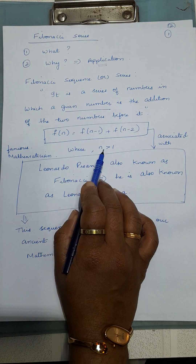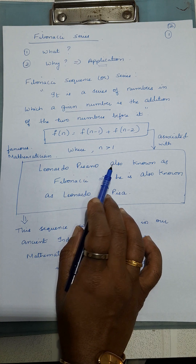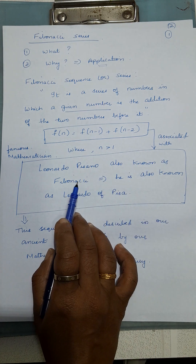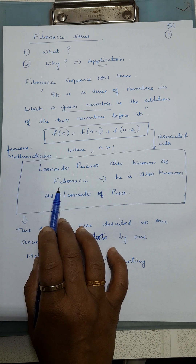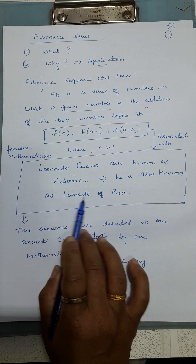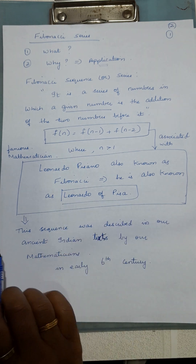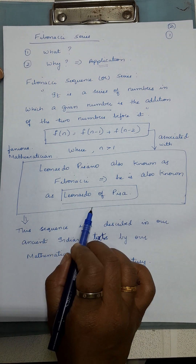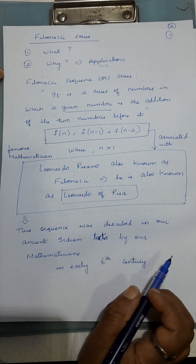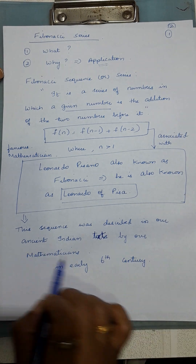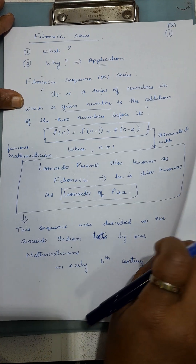This applies where n is greater than 1. This particular mathematical equation is associated with the famous mathematician Leonardo Pisano, also known as Fibonacci, and also known as Leonardo of Pisa. He is the person who found it out. But before that, our Indian mathematicians were already making use of the Fibonacci series in early 6th century. This is the history of Fibonacci series.